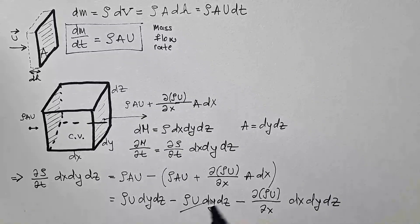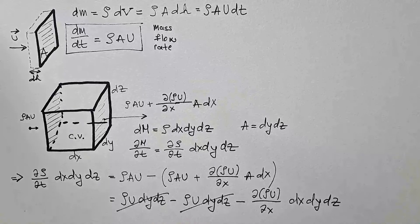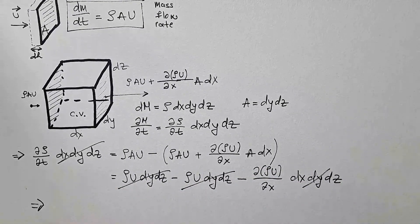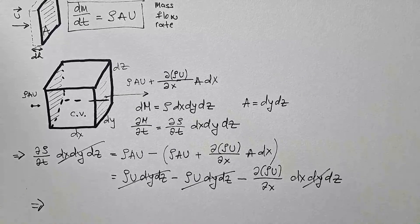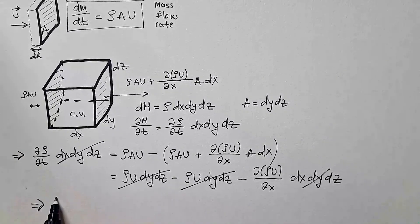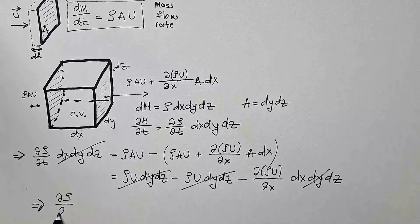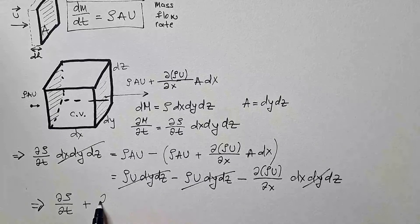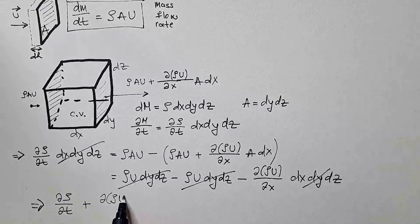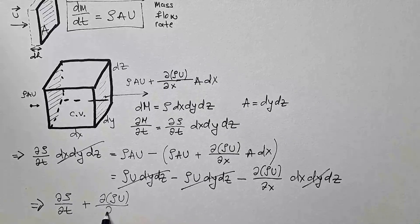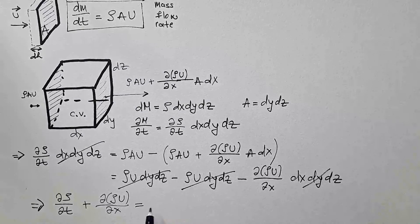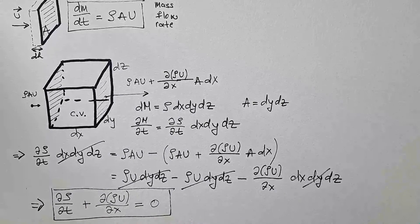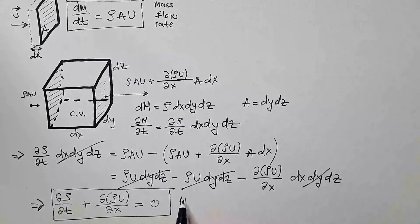Now, look. These two cancel each other. And this cancels with this. So we arrive at the expression that says δρ/δt. I move this to the other side. So it becomes plus δ(ρu)/δx is equal zero. And this is mass continuity equation in one dimension.